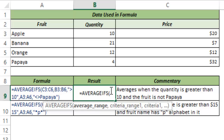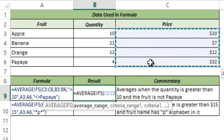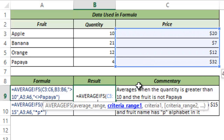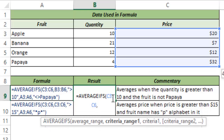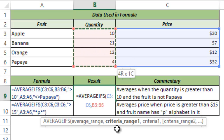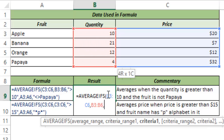In this case I want to find the average of the price points with two conditions. My average range is all these price points, so I select C3 to C6 and hit comma. Now for CRITERIA_RANGE1, my first condition is that the quantity should be greater than 10. So I select the criteria range, and my exact criteria is greater than 10, which I type within double quotes.